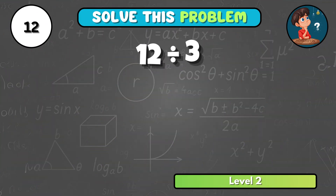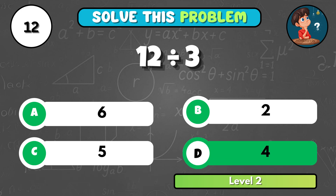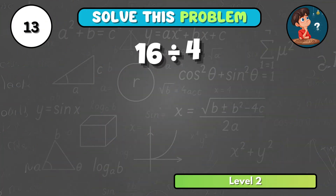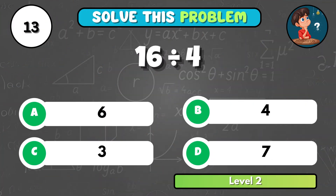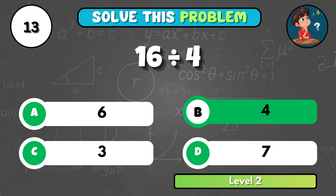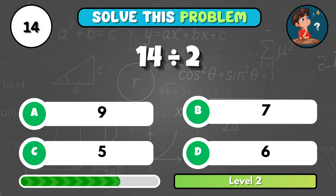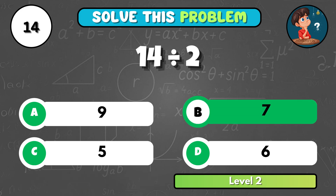Now tell me, what do you get when twelve is divided by three? It comes to D, four. Here's one for you — sixteen divided by four equals what? That's B, four. What about fourteen divided by two? It equals B, seven.